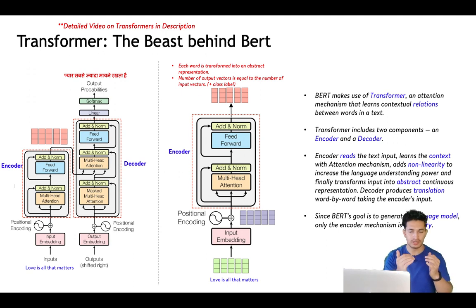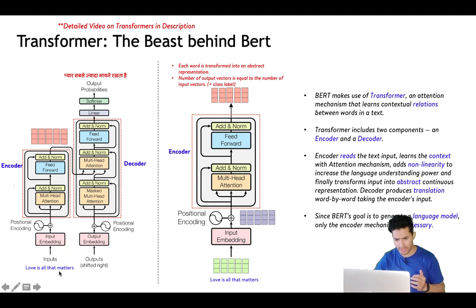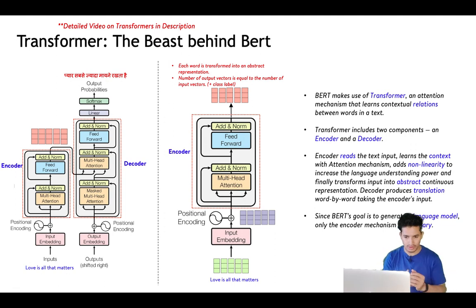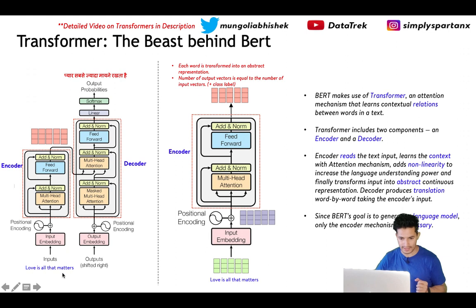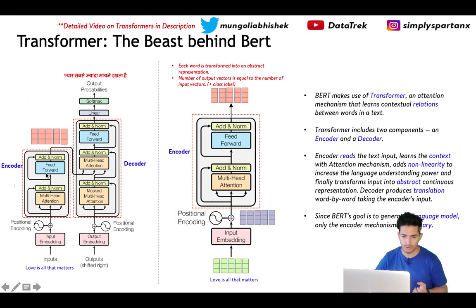The transformer was designed to solve language translation tasks. For example, given the input 'love is all that matters,' the output would be that English sentence transferred to another language like Hindi. The transformer has two components: the encoder and the decoder. The encoder takes the input and provides a very rich encoded representation of each word in the sentence, using multi-headed attention and feed-forward neural networks along with non-linearity.